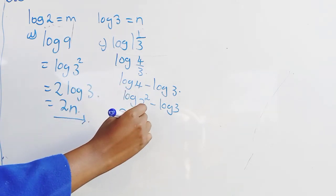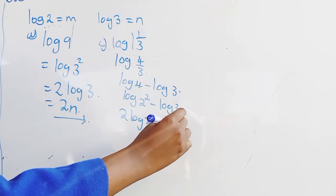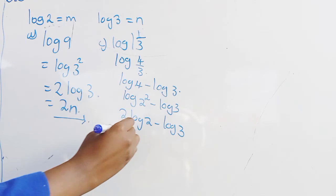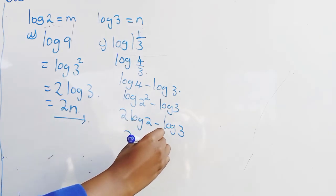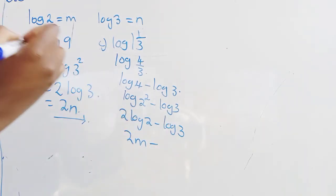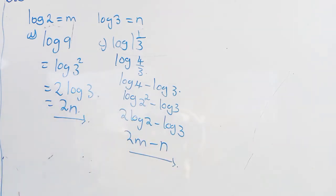Bringing down the power from 2 squared gives us 2 logarithm of 2 minus logarithm of 3. Two logarithm of 2 is 2m, and logarithm of 3 is n, so the answer is 2m minus n. That's it for Part C.